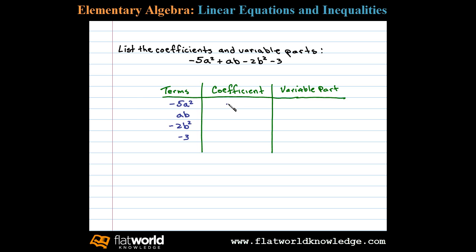Here the coefficient is -5. When there's no number in front, there's really a 1, so the coefficient there is 1. Here it's -2, and for the constant term, -3 is the coefficient. Now, all the variable factors